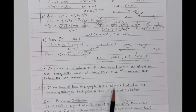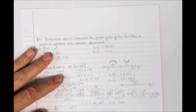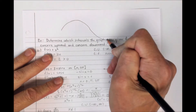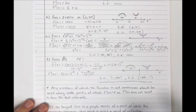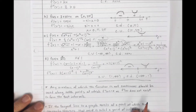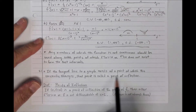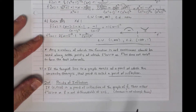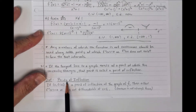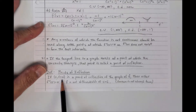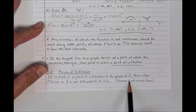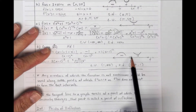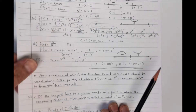If the tangent line to the graph exists at a point where concavity changes, that point is called a point of inflection. The concavity changes from concave down to concave up, and that key transition point is the point of inflection. By definition, if (c, f(c)) is a point of inflection, then either f double prime of c equals 0 or f is not differentiable at x = c. Note that the converse isn't always true.